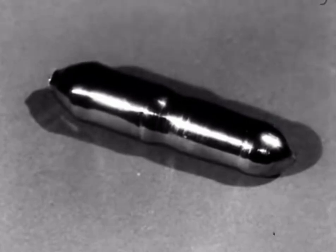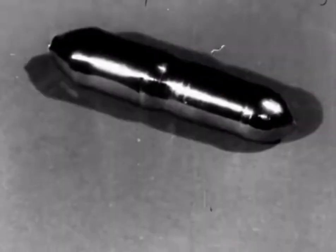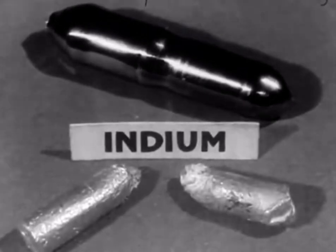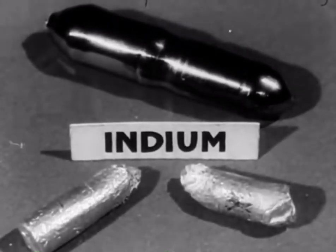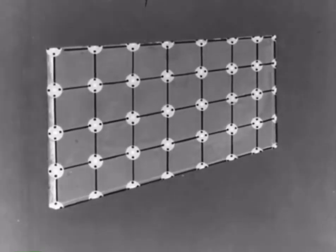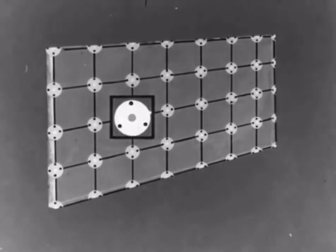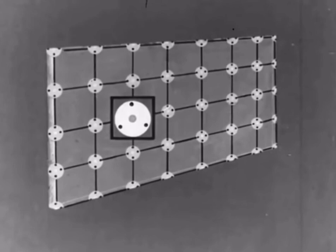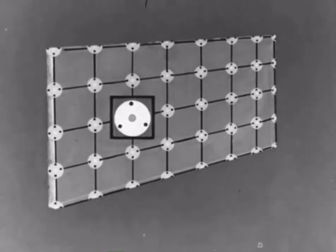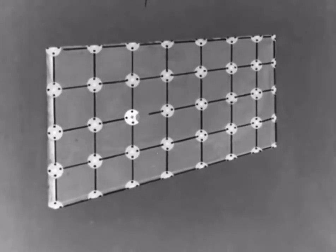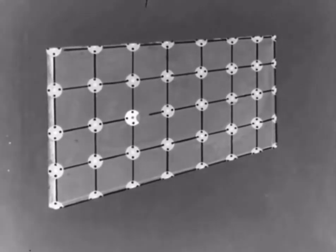There is another type of impurity which also increases the conduction of pure germanium, the metal indium. Here is the germanium lattice again. The atom of indium, as you see, has only three electrons in its outer orbit. When introduced into the germanium crystal, the three electrons form bonds with three adjacent germanium atoms, leaving a fourth bond incomplete.